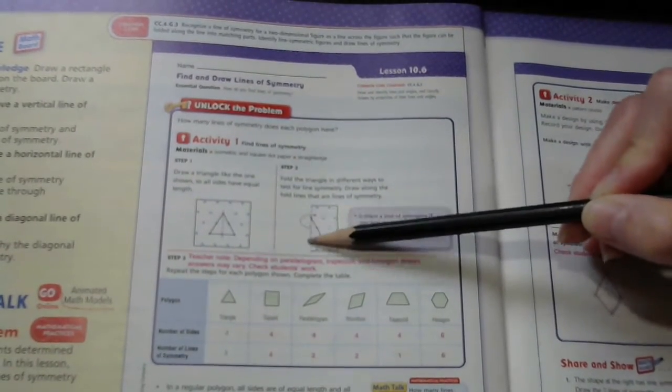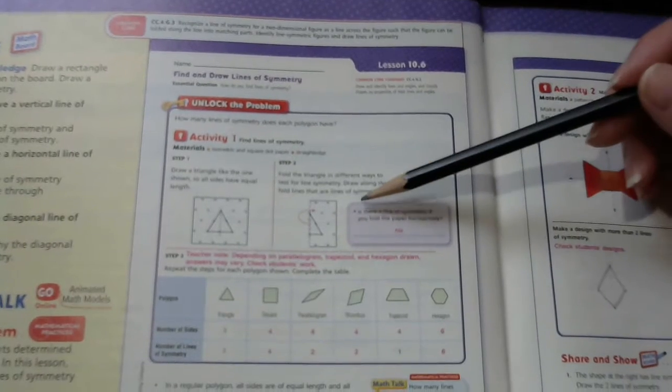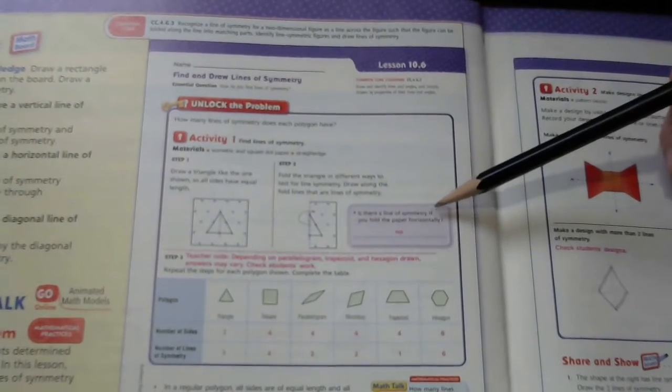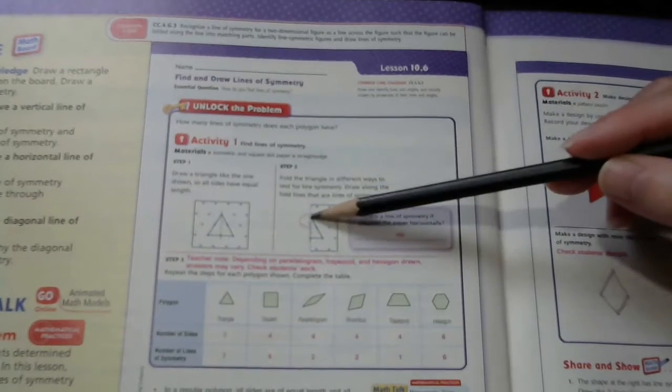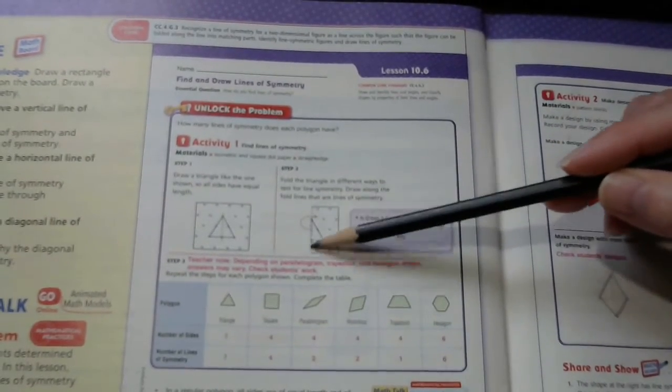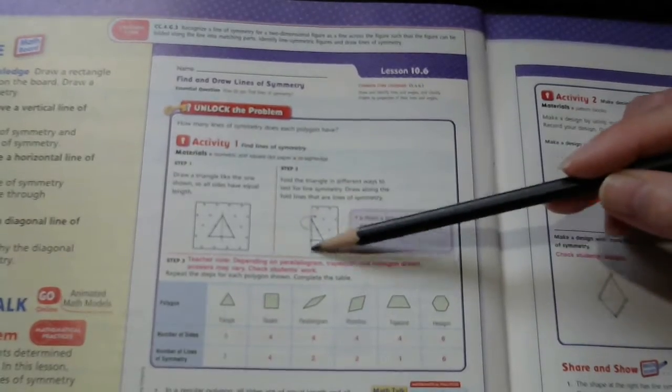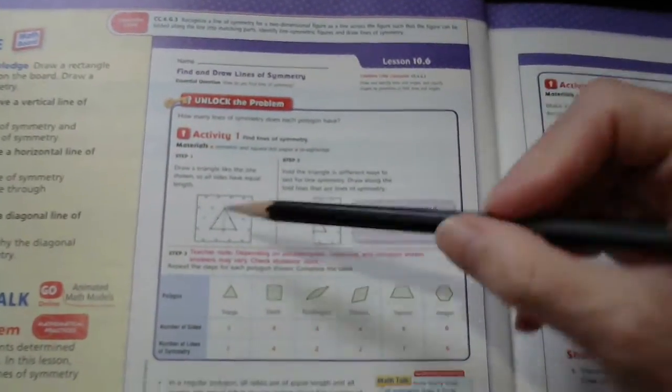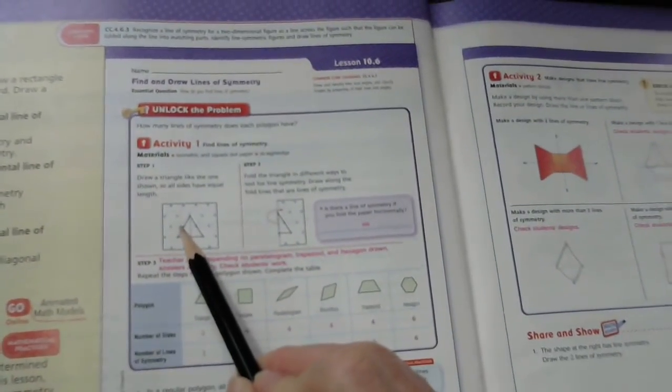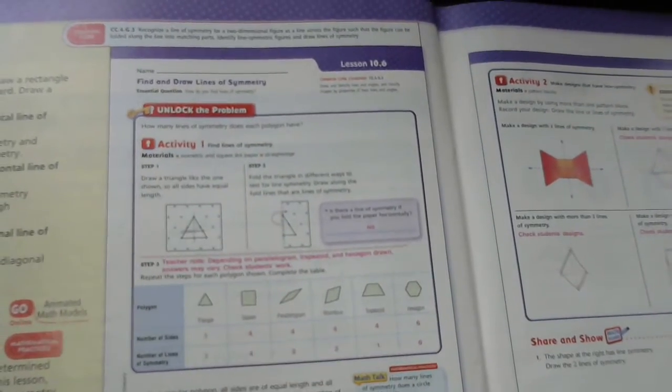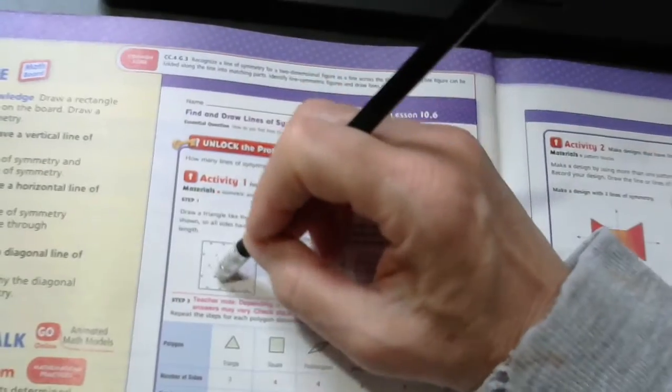Draw along the folded lines that are lines of symmetry. For instance, this is a line of symmetry. It says, is there a line of symmetry if you fold the paper horizontally? In this picture, it is drawn vertically, or folded vertically, and there is a line of symmetry. If I folded that triangle horizontally, I would have a line here, and it would not be a line of symmetry.